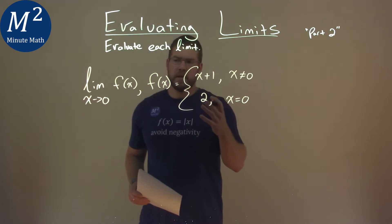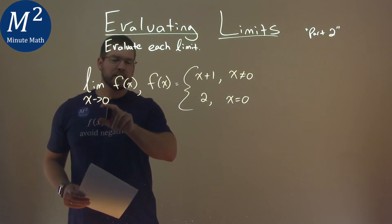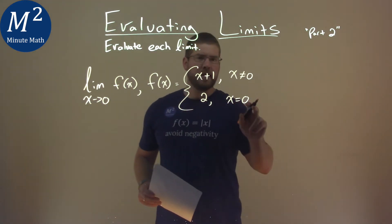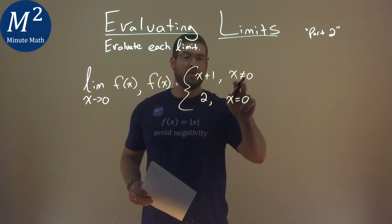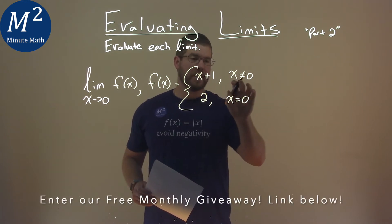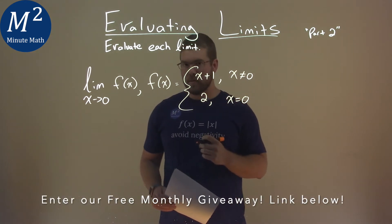Now one thing I'm noticing here about this limit, it says when x is approaching 0. Well, we have two things that happen here. Our first equation says it happens everywhere except for when x is equal to 0, so x cannot equal 0 here, and this only happens when x equals 0.